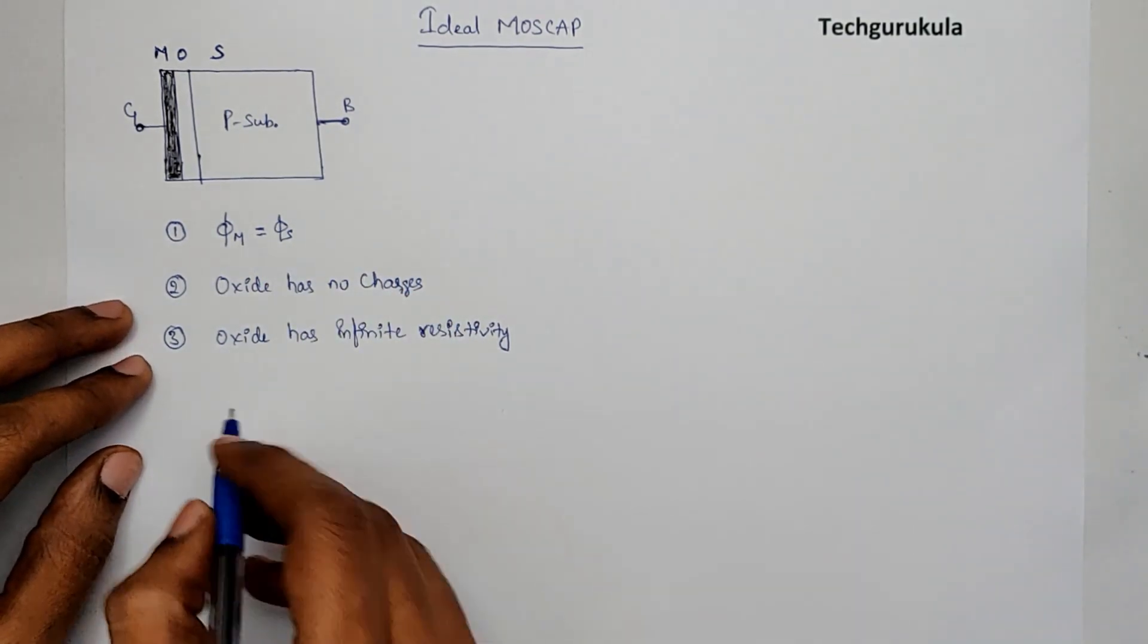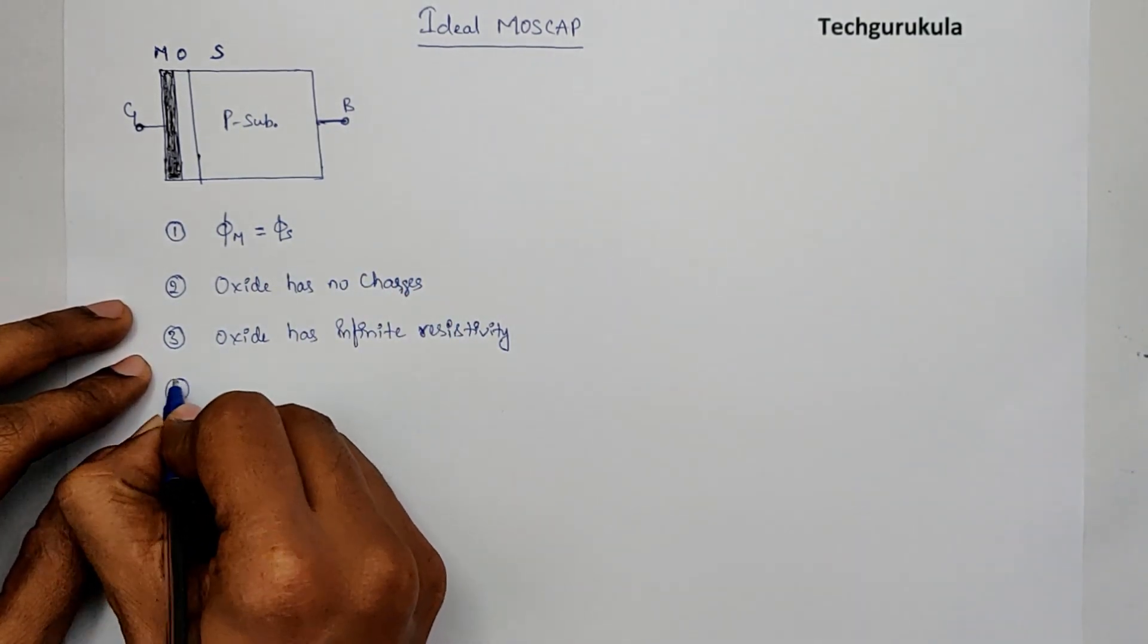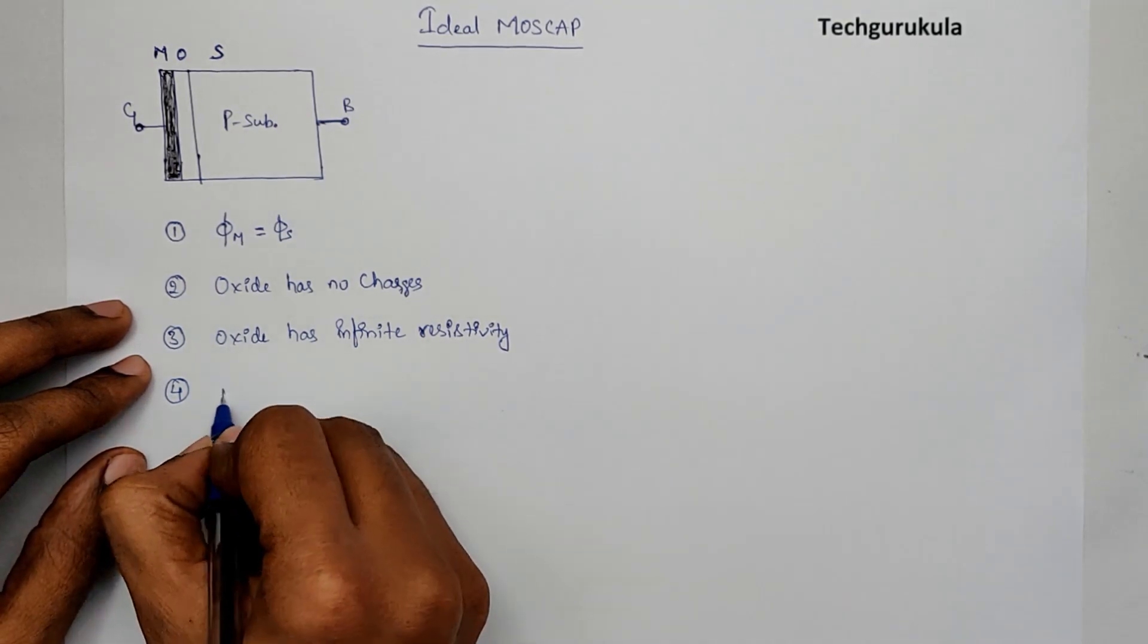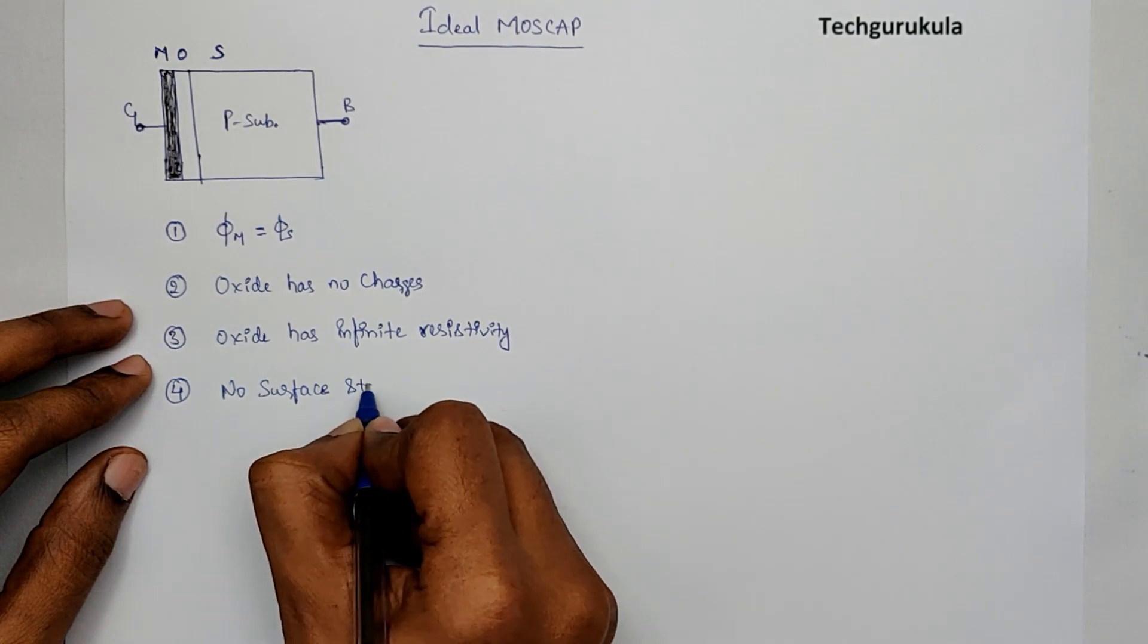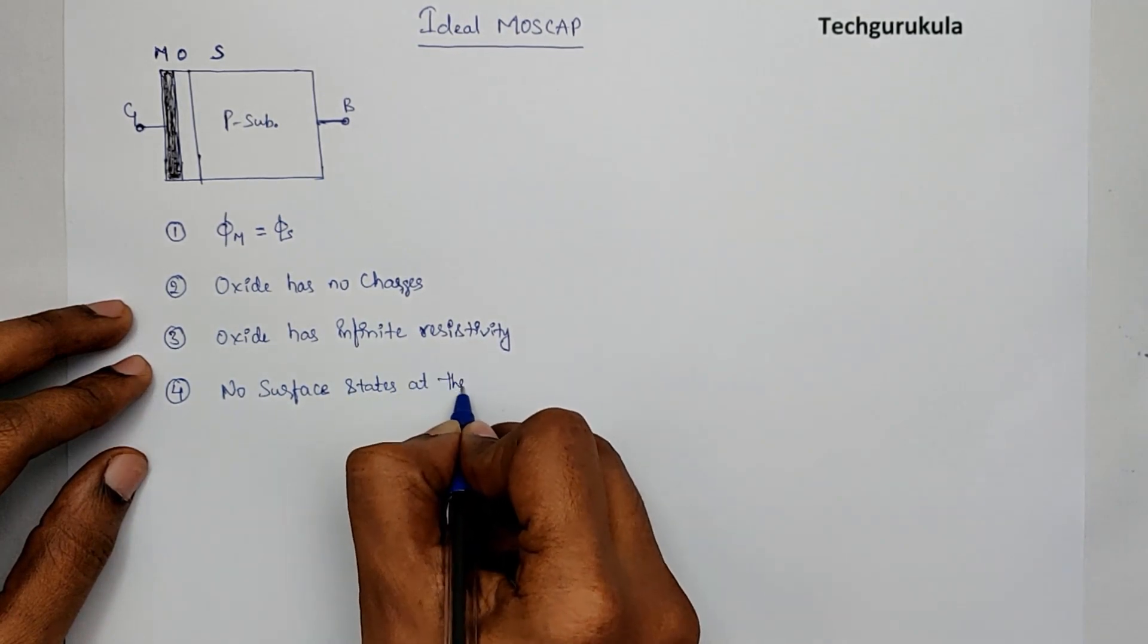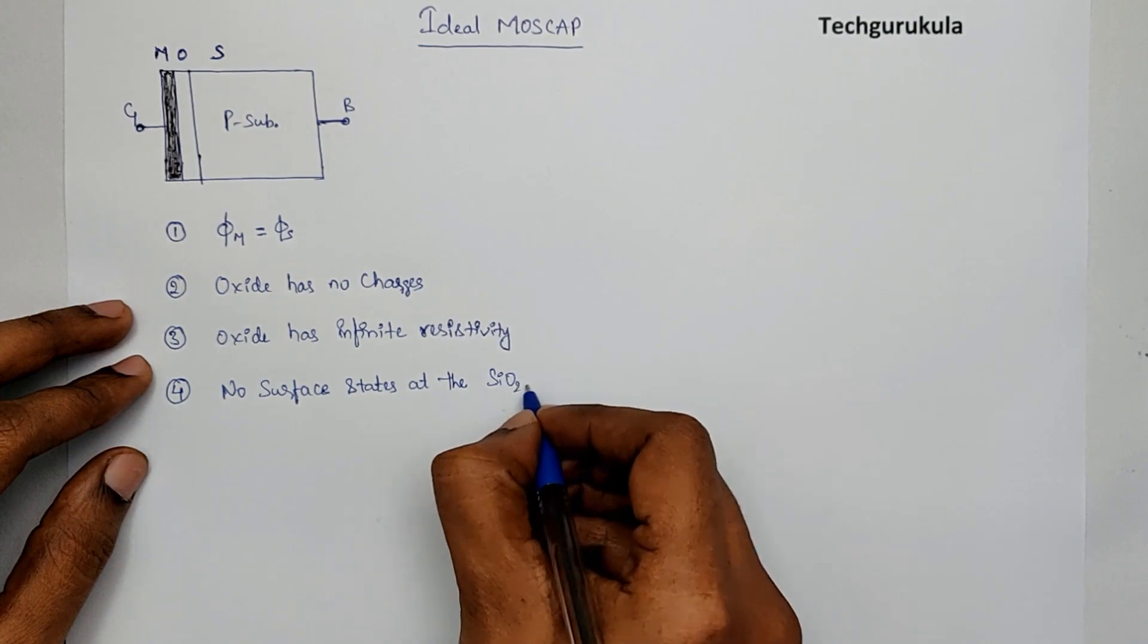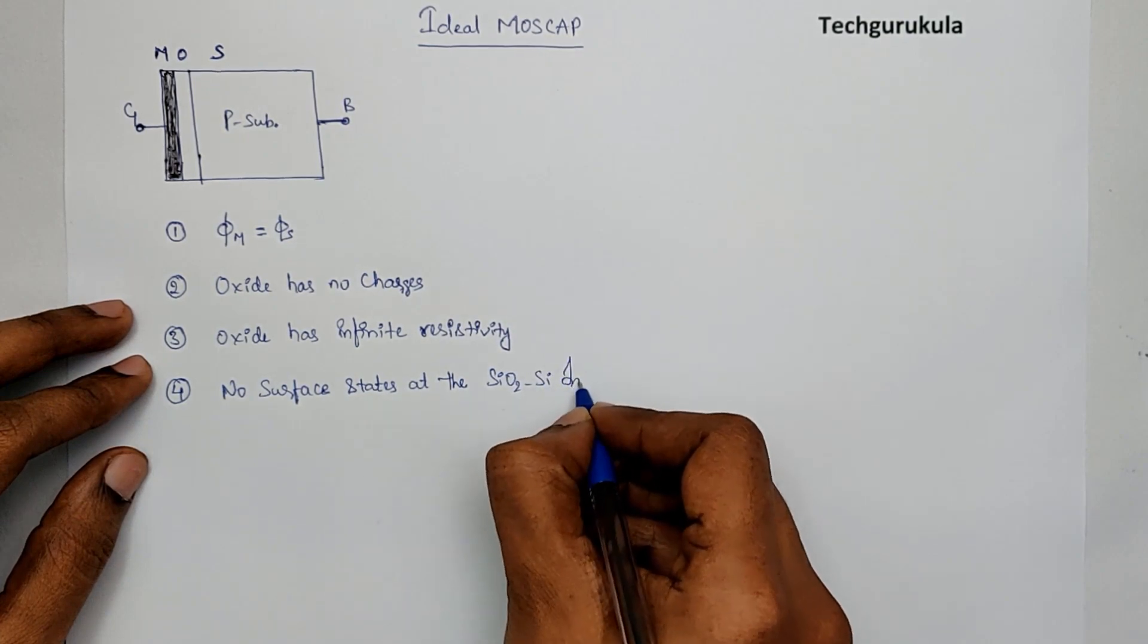And the last but not the least assumption that we're going to make here is no surface states at the silicon dioxide-silicon interface.